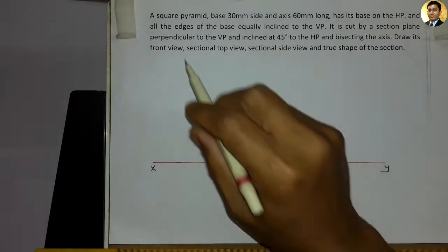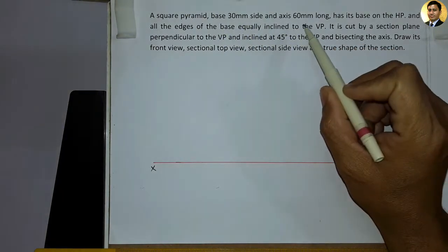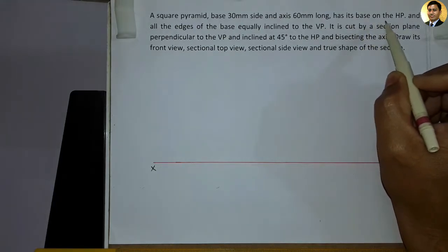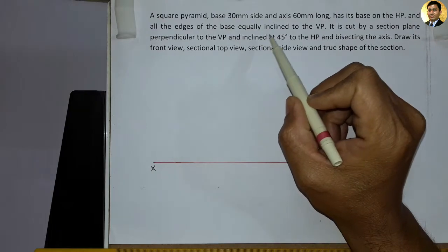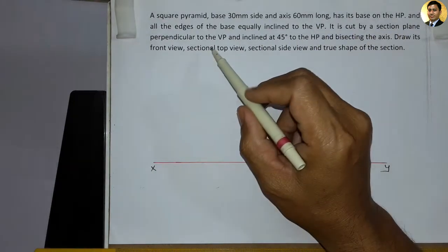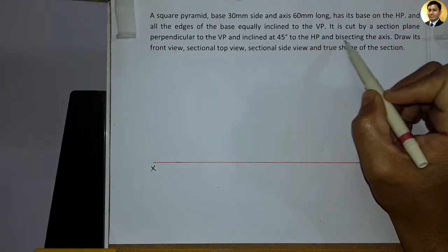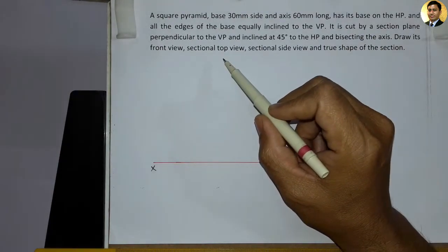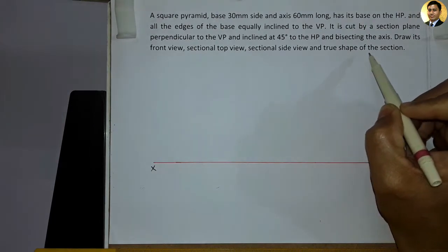Data is this prakar hai: A square pyramid, base 30 mm side and axis 60 mm long, has its base on the HP and all the edges of the base equally inclined to the VP. It is cut by a section plane perpendicular to the VP and inclined at 45 degrees to the HP, bisecting the axis. Draw its front view, sectional top view, sectional side view, and true shape of the section.